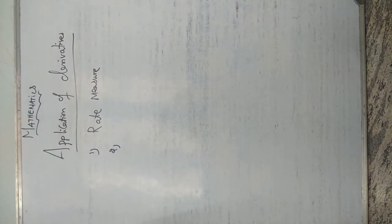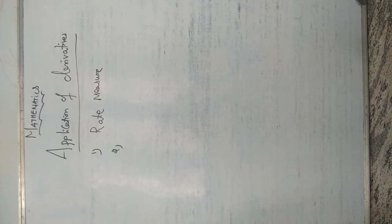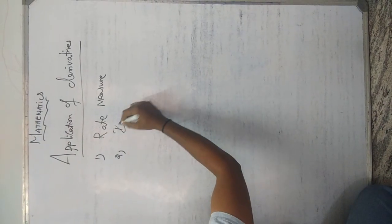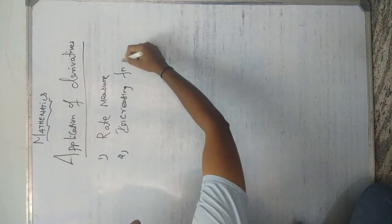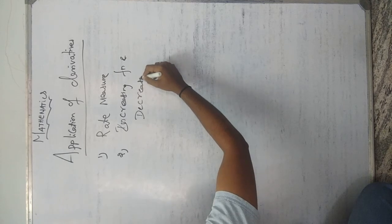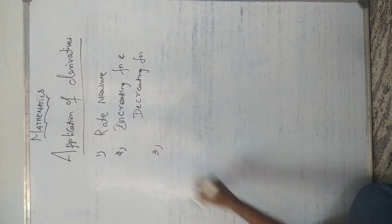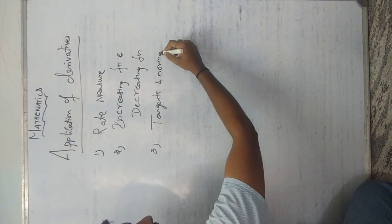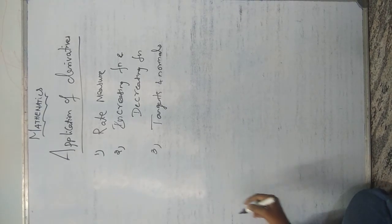Rate measure — so rate measure is the first sub-topic. The second sub-topic is increasing function and decreasing function, increasing graph and decreasing graph. The third one is tangents and normals.